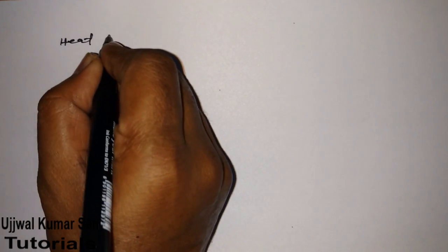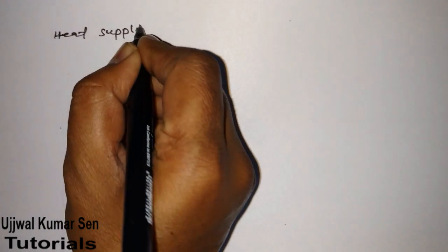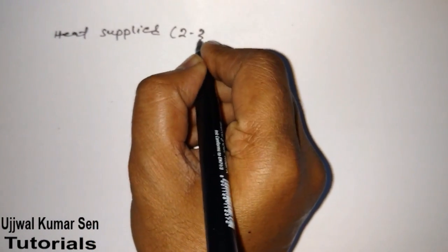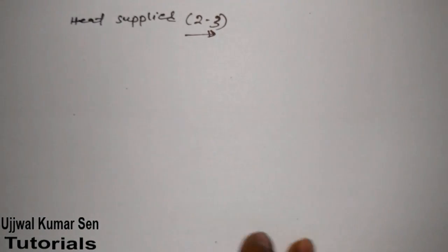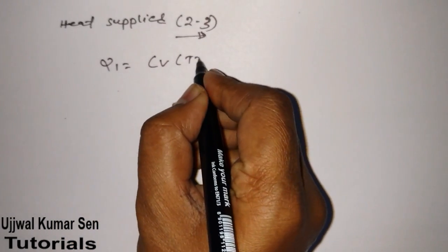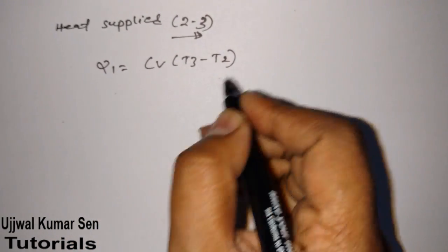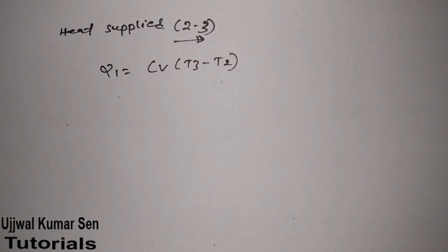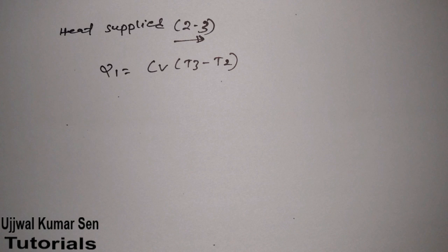Now, talking about heat supplied: heat is supplied during the 2 to 3 process. So we can say Q1 is equal to Cv times (T3 minus T2), where Cv is the specific heat at constant volume, T3 is the temperature at point 3, and T2 is the temperature at point 2.